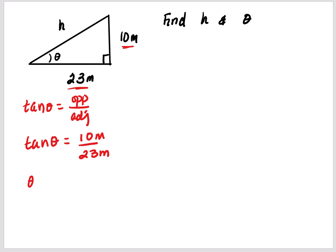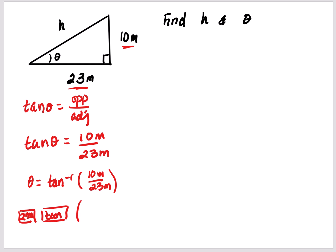Since I have to take the inverse of the tan, this is going to be tan negative 1 of 10 meters divided by 23 meters. On your calculator you press second, tan, and then punch in 10 divided by 23. If you do your math correctly, you should get approximately 23 degrees.